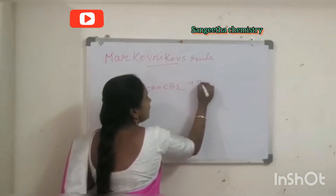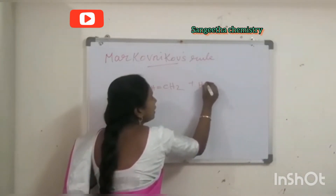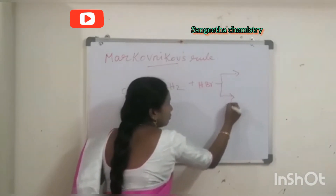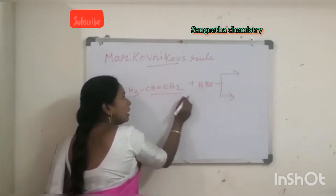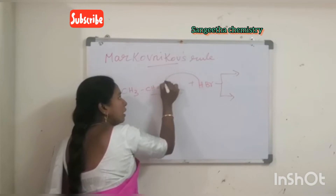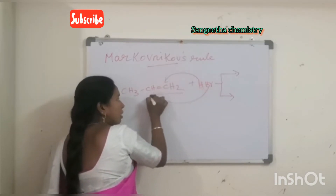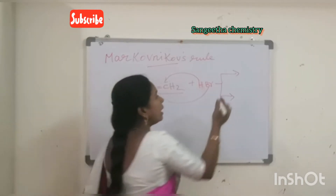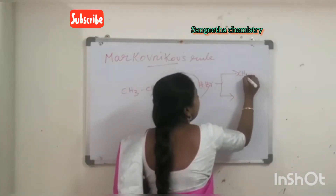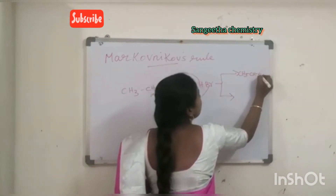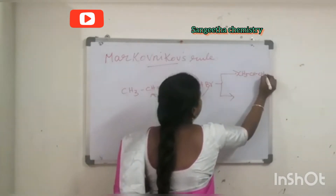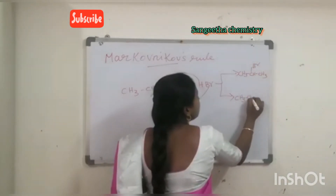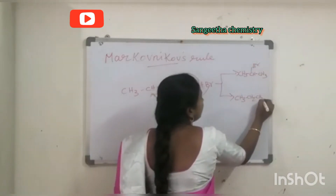When propene (CH3-CH=CH2) is reacting with HBr, there are two chances — hydrogen can bond at either carbon of the double bond — giving two possible products: CH3-CH(Br)-CH3 (2-bromopropane) or CH3-CH2-CH2Br (1-bromopropane).